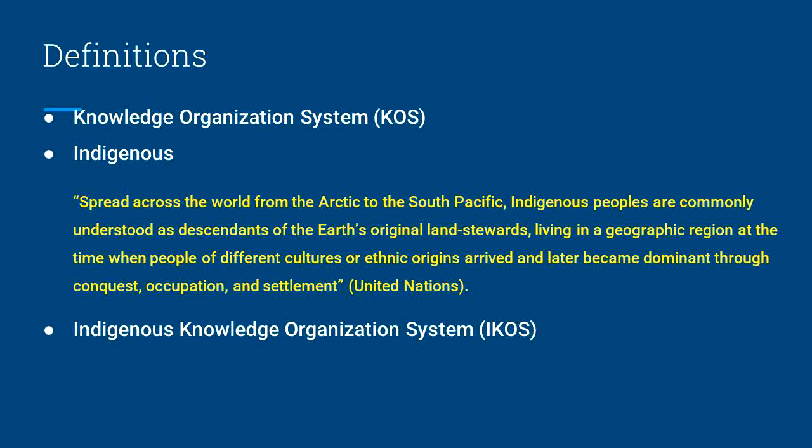Daniel Jodre and Arlene Taylor define a KOS, or Knowledge Organization System, as a generic term for all types of schemes for organizing information, including classification schemes, categories, authority files, subject heading lists, thesauri, and ontologies. As list professionals, we know that these socially constructed systems have biases and implications that extend beyond libraries, archives, and museums.